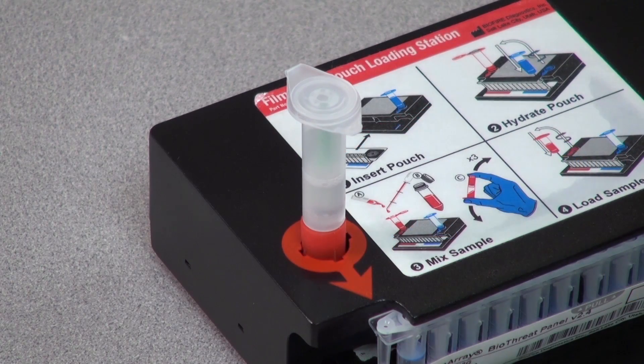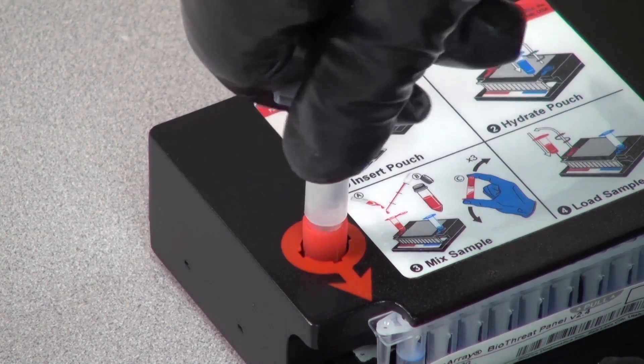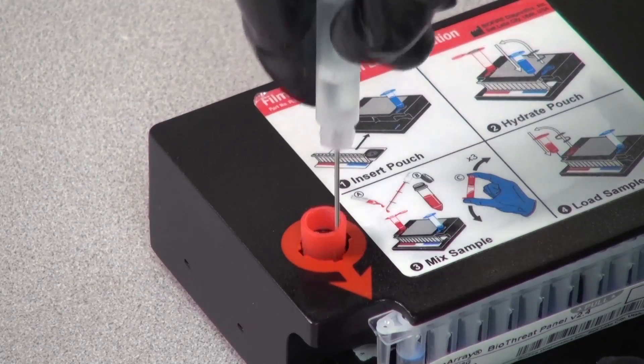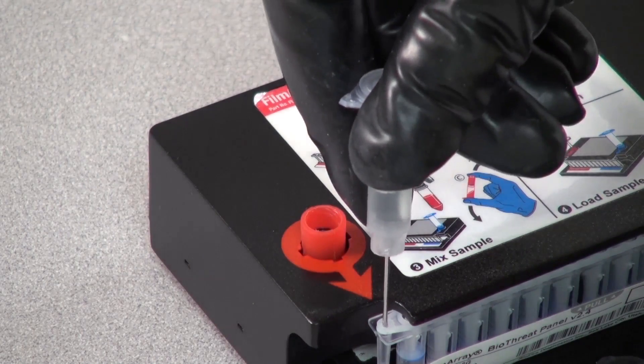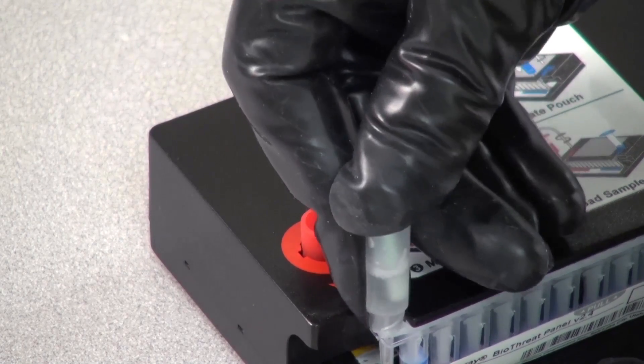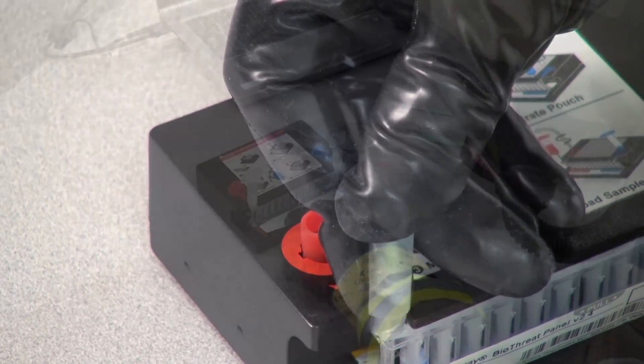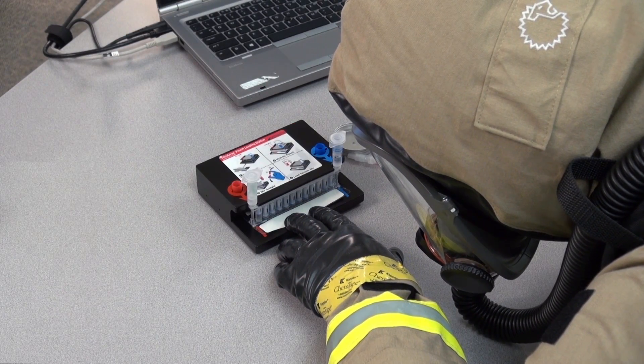Next, unscrew the injection cap from the red vial, leaving the cap in the loading station. Insert the red vial into the sample port of the pouch like before. Wait 5 seconds, then inspect. The pouch is now prepared.